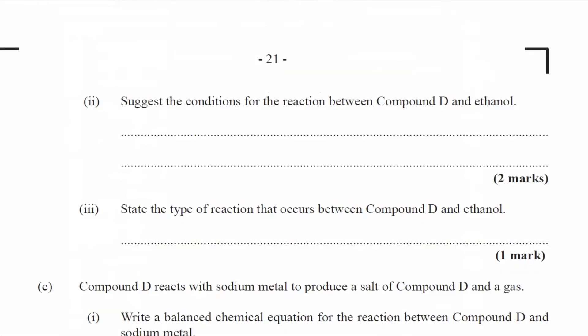Part two: Suggest the conditions for the reaction between compound D and ethanol. So we need reflux. We need heat. Well, reflux denotes that heat is going to be present. We need sulfuric acid as a catalyst. That should be it.